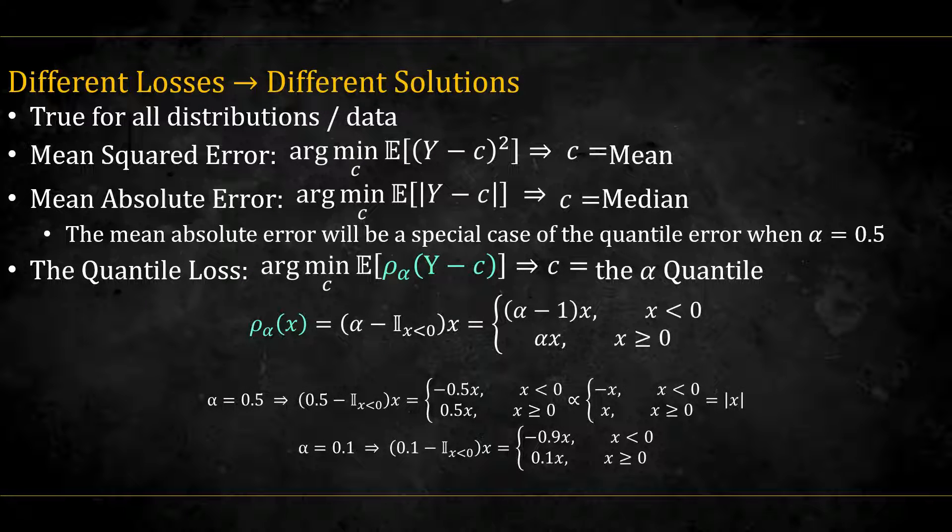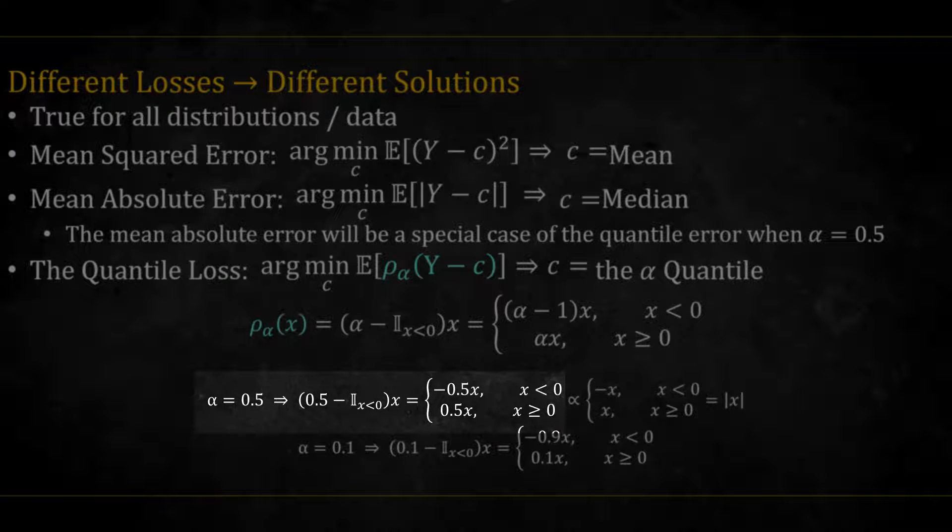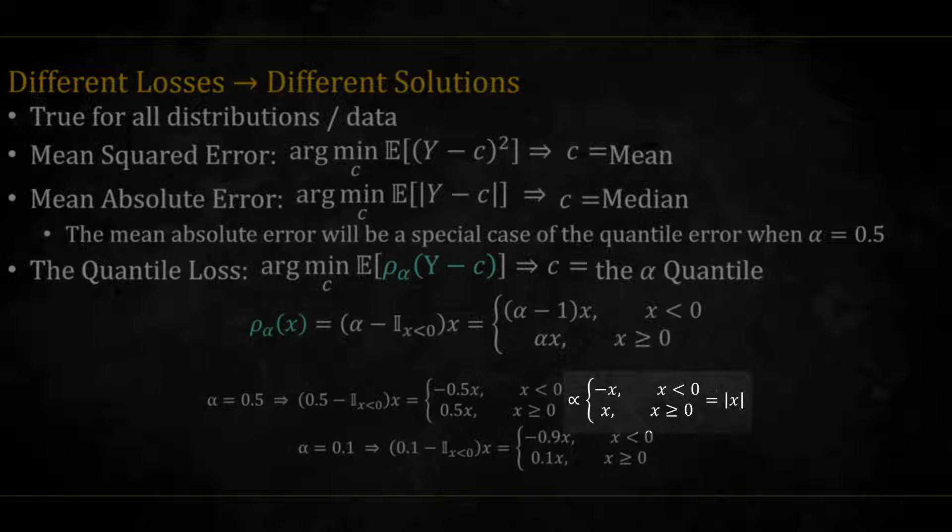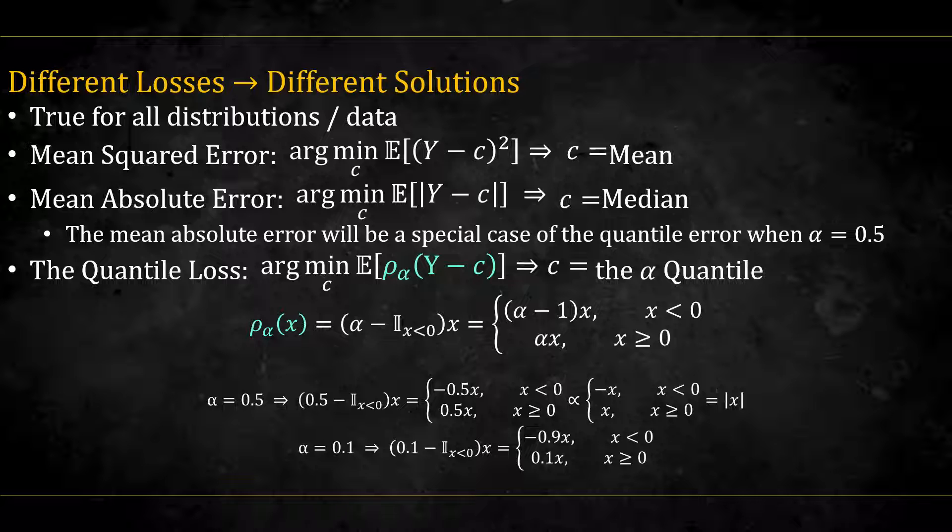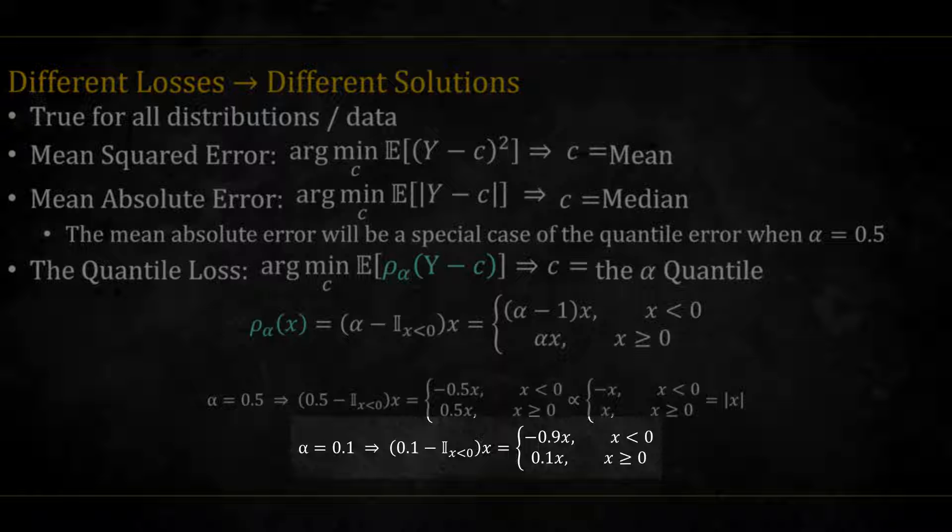Here are concrete examples. If alpha is equal to 0.5, we get the following, which is proportional to the absolute value. Proportions don't matter in optimization problems, so we will get the same result. If alpha is equal to 0.1, we get the following.